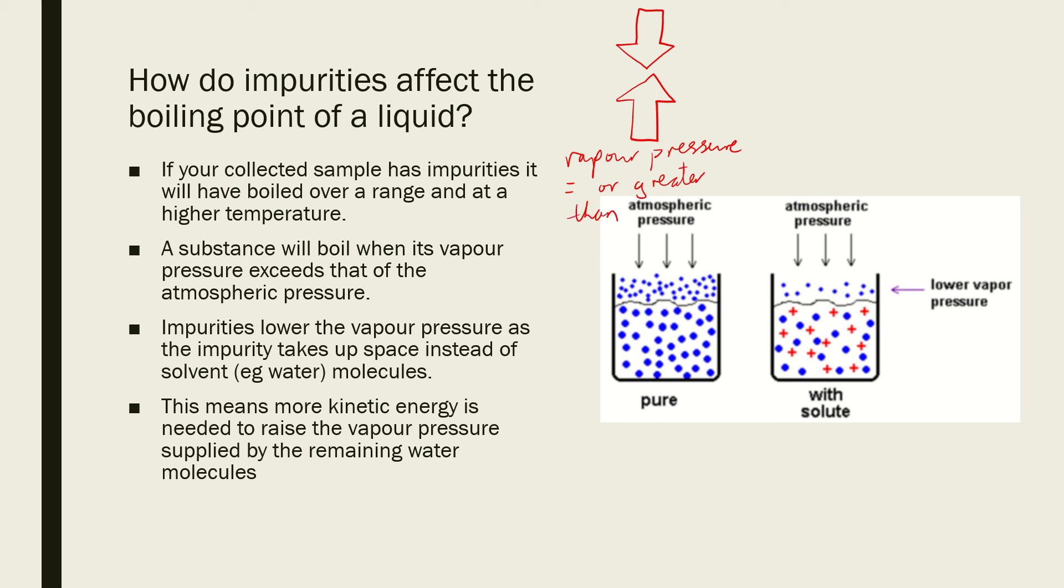Now what an impurity does - the impurities across here are going to be represented by the red crosses. The red crosses, as you can see, lower the amount of water molecules present in our beaker there. Because of that, we've got less water molecules pressing up against the atmospheric pressure here. So this lowers the vapor pressure.